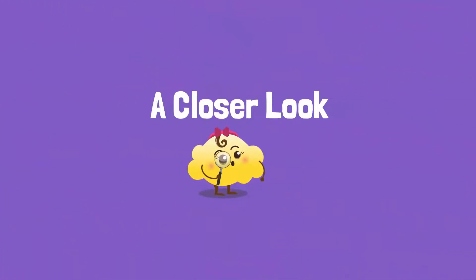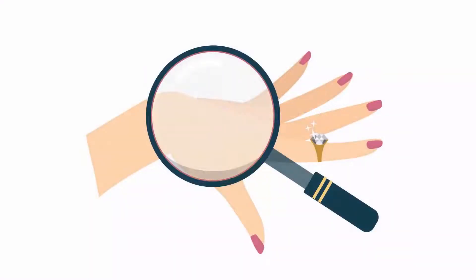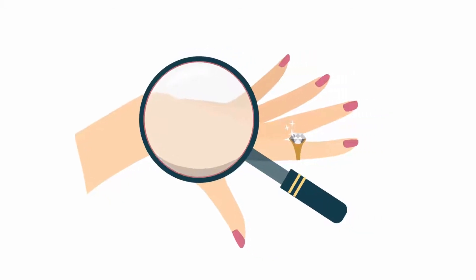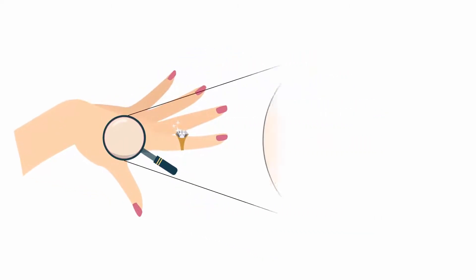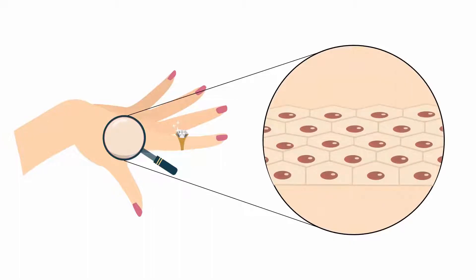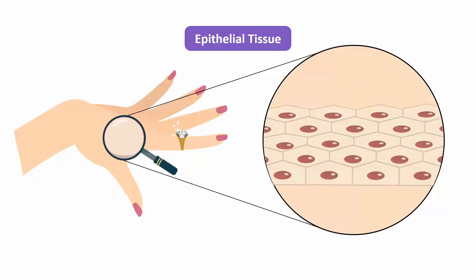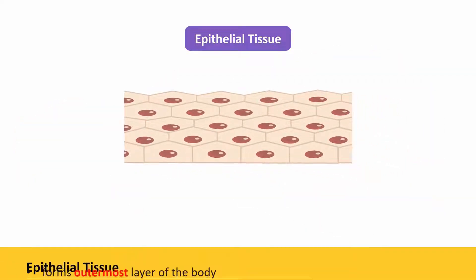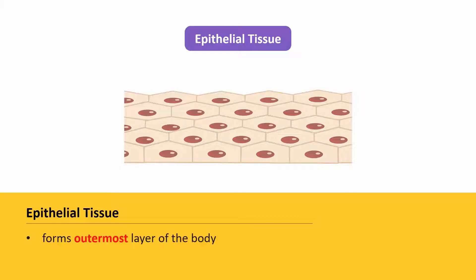Let's take a closer look at some of the tissues in animals and plants. Look closely at your skin. Do you think it's made up of only one, two, or three cells? Of course it isn't! Many similar cells in the upper layer of our skin come together to make epithelial tissue. Epithelial tissue forms the outermost layer of our bodies. It protects the structures, systems, and other tissues that are inside of our bodies.